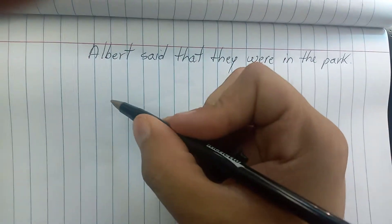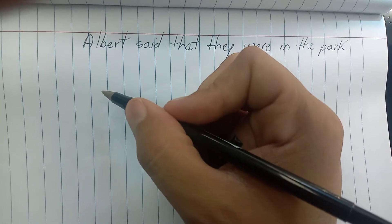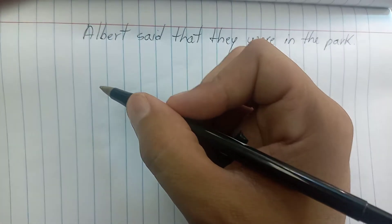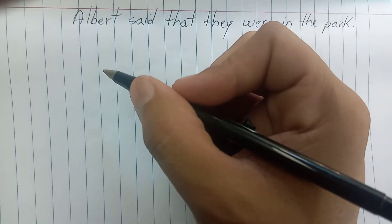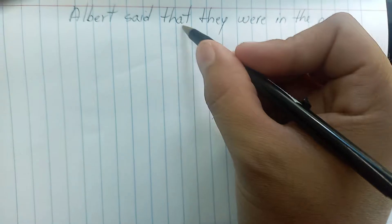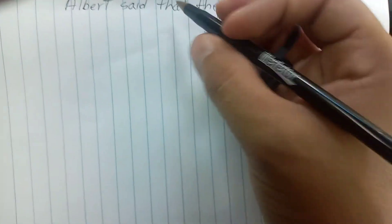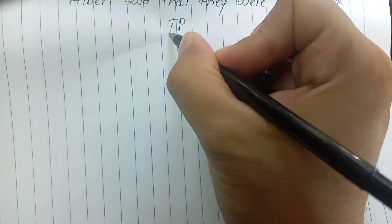Okay students, this time we are going to draw the tree diagram for a sentence that has an embedded clause using a complementizer. The first thing we need to do is to write the letters TP that stands for tense phrase.